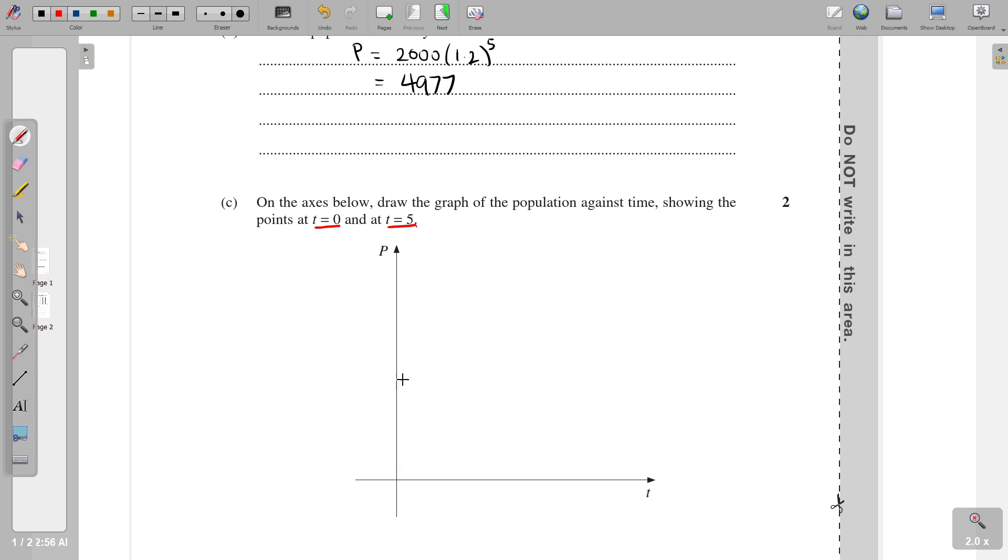But where is 2000? It doesn't even matter. We just put it somewhere here. We just say it's 2000. And we make sure we start there because that's the initial population before any time has passed. And then for t equals five, we know we're meant to be at 4977, which is a chunk more than double that. Let's just put it here. So we'll go 4977. And the shape of the exponential from the previous video should be something like that. It's just got to be speeding up as we go. So the graph needs to get steeper as we travel along it.